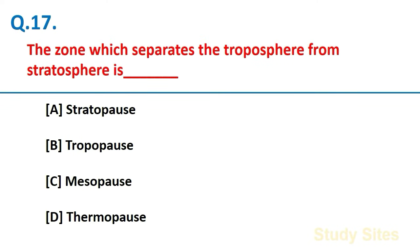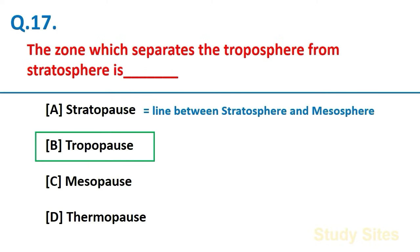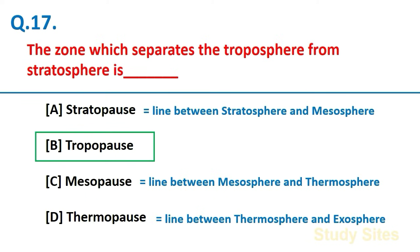The zone which separates the troposphere from the stratosphere is Tropopause. And Stratopause lies between stratosphere and mesosphere. Mesopause lies between mesosphere and thermosphere and thermopause lies between thermosphere and exosphere.